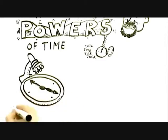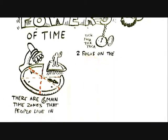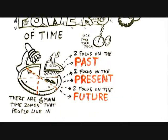So what we have discovered in 30 years of research, there's six main time zones that people live in. Two focused on the past, two on the present, and two on the future.